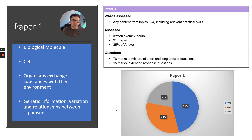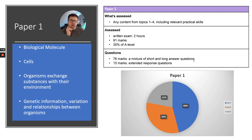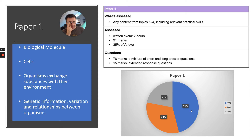Paper 1 is assessed on biological molecules, cells, organisms exchanging substances within their environment — including gas exchange and mass transport — and genetic information, variation and relationships between organisms. It is a two-hour exam, 91 marks, worth 35% of the A-level. You get 76 marks of mixed short and long answer questions, and 15 marks of extended response questions at the end. I'd probably start with those 15-mark questions. Paper 1 has a vast majority of AO1 — description and recall of processes — then AO2 for analysing and interpreting data, with a smaller proportion of AO3 for evaluating information.